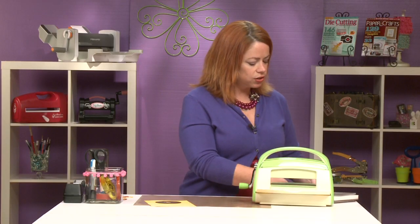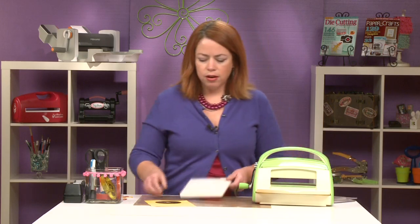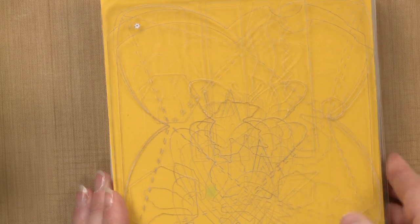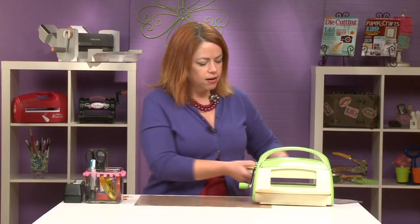Now the next thing you'll do is you'll grab your plates and prepare this for the machine. Flip that over so that you have the cutting edge up and now you can put that into your machine.